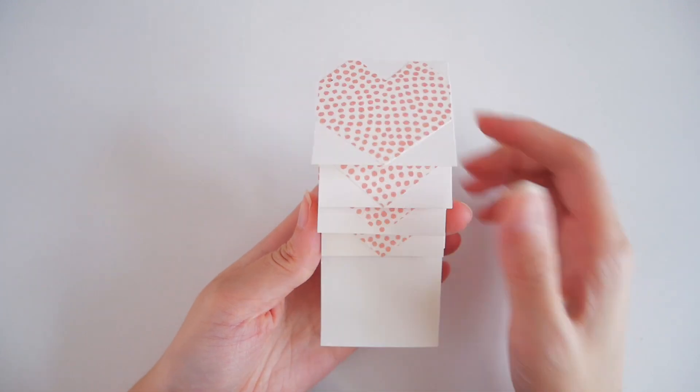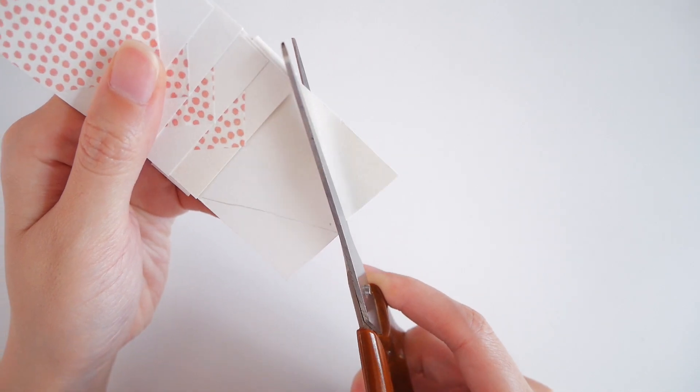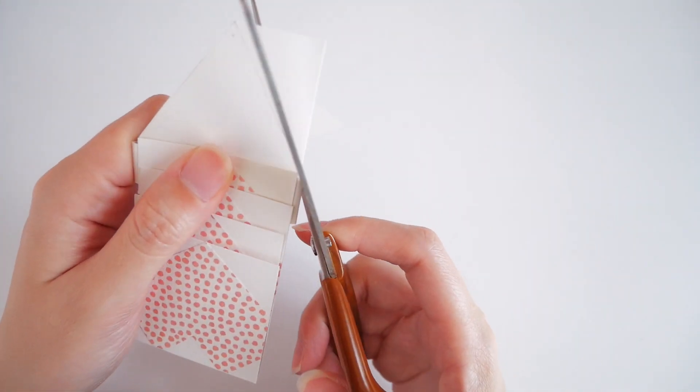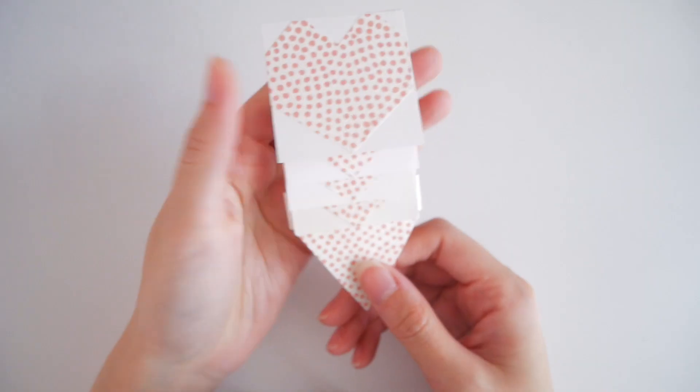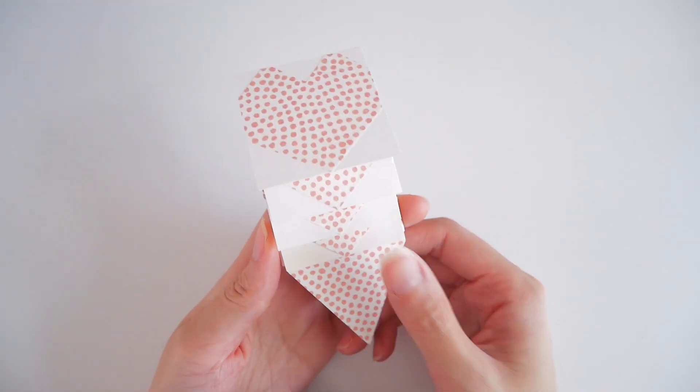You can leave the cards as they are, but I prefer to trim the bottom area into a triangle. I also pasted the same pattern paper to match the heart shapes.